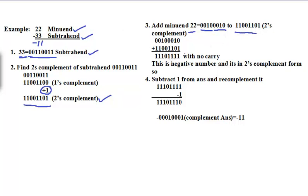Adding 0010 0010 and 1100 1101, we get the answer 1110 1111. Bit by bit: 0+1=1, 1+0=1, 0+1=1, 0+1=1, 0+1=1, 0+0=0, 1+0=1, 0+1=1. So the result is 1110 1111.